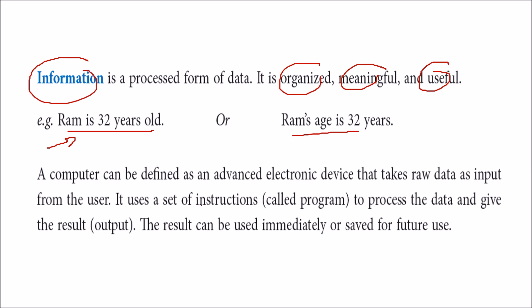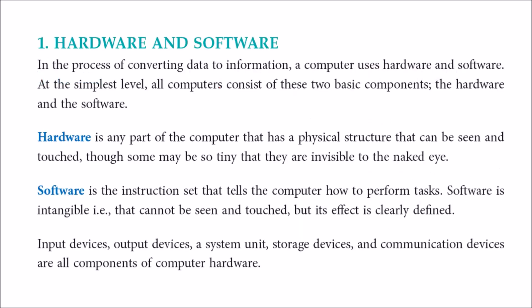A computer can be defined as an advanced electronic device which takes raw input from the user, uses a set of instructions called a program to process the data, and then provides the result as output. The result can also be saved for further or future use.